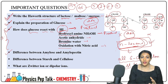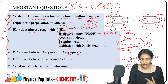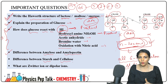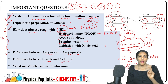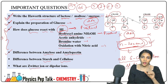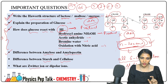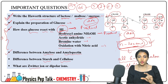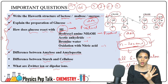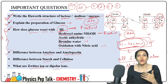Next question: the difference between amylose and amylopectin, or the difference between starch and cellulose — this is a 2-mark question. And the next thing: what are zwitter ions? Give the definition of zwitter ions.